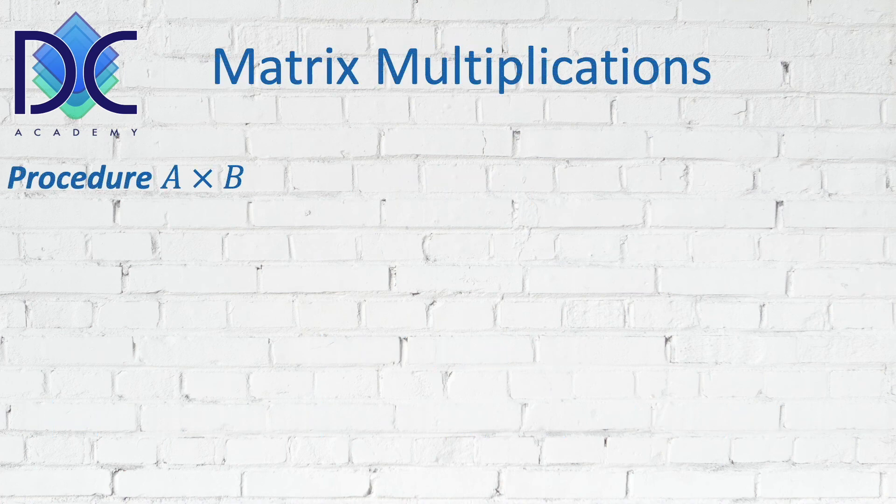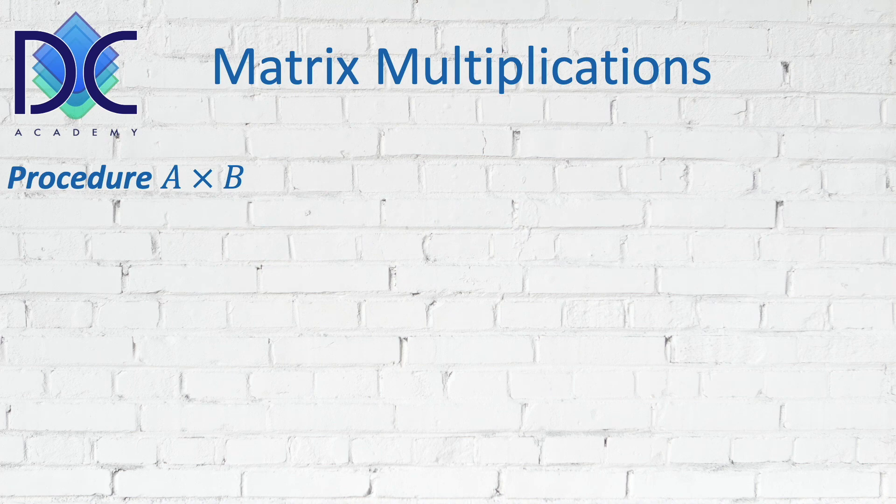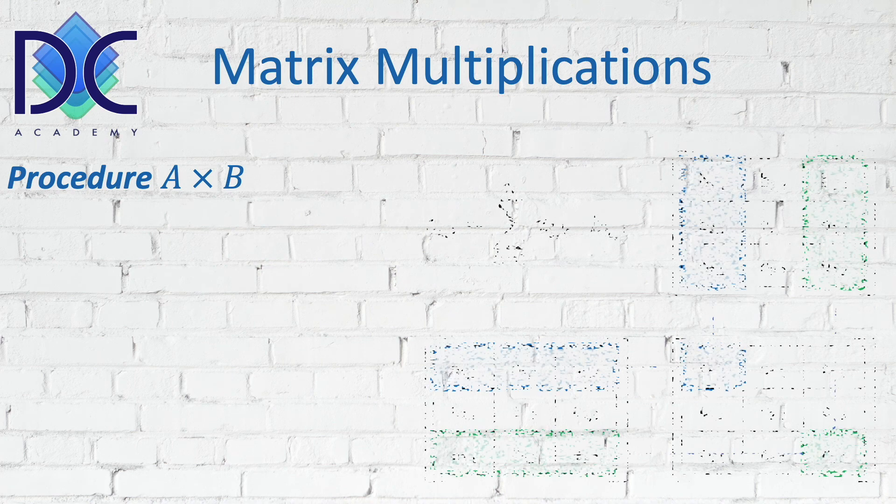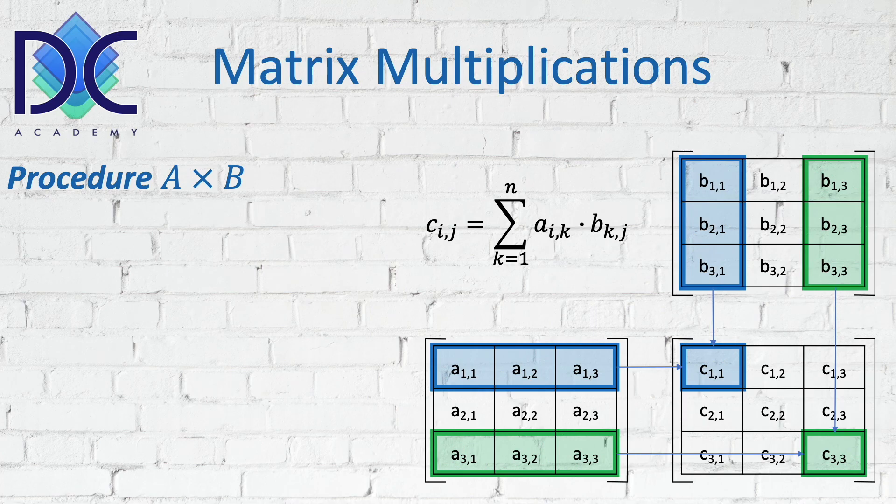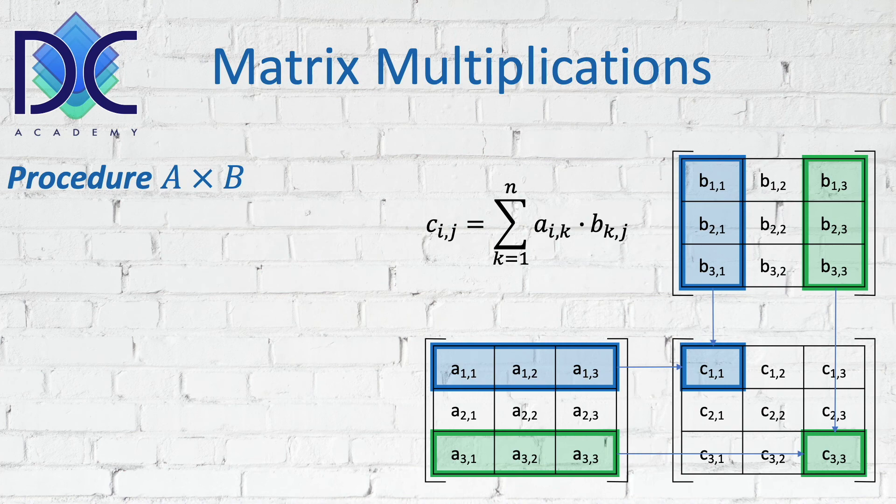When we look at the classical matrix calculation, we have the procedure to multiply A with B. We have two matrices here, and we have to see that the number of rows and columns fit each other in order to be able to do the matrix calculations.